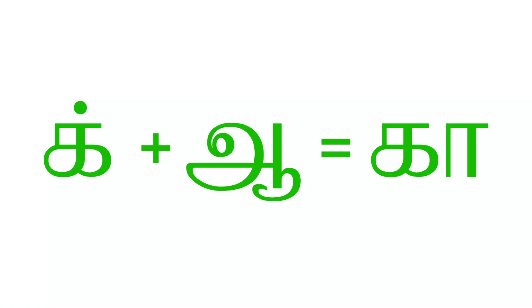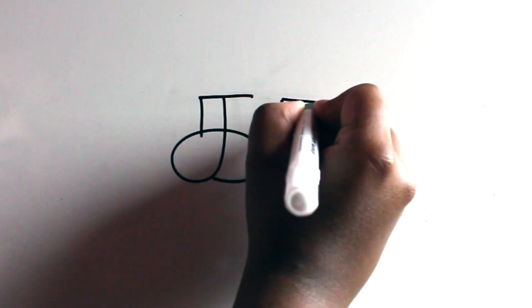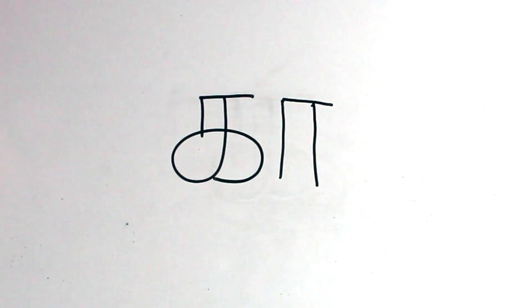Combining ik and ā makes kā. Kā is a long-sounding letter. Notice here the difference between ka and kā is the arable, so that's the second symbol next to the ka. Now let's write kā. First you need to write the letter ka and add the arable next to it, which makes kā. One more time.